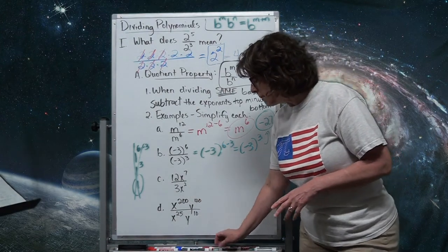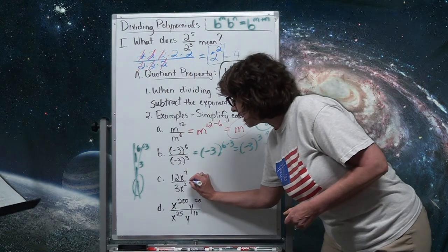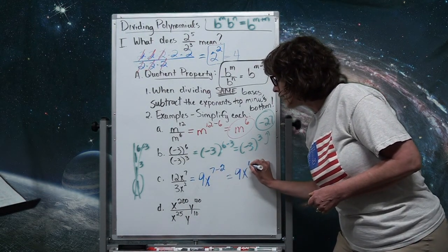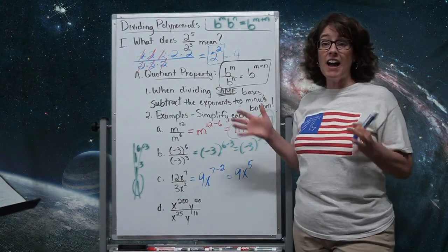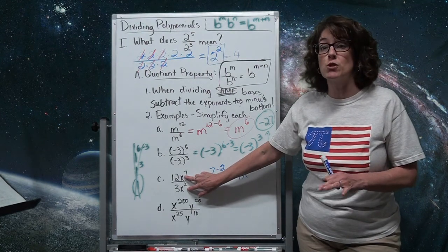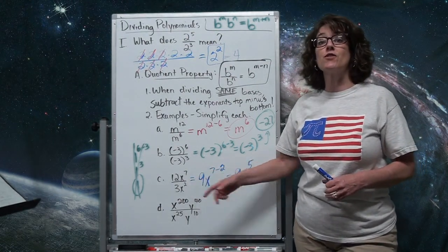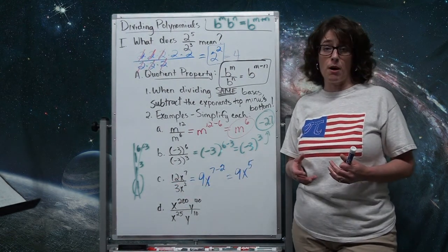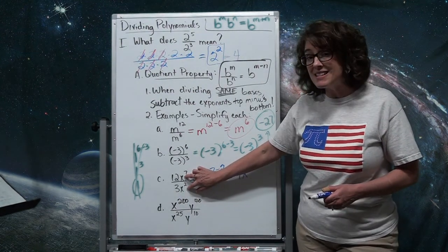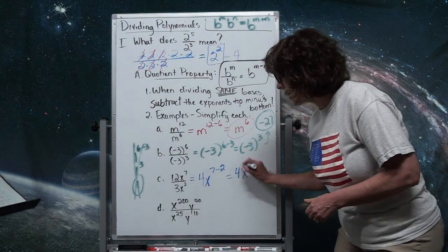In this example, a lot of people get excited and subtract the coefficients: 12 minus 3 to get 9, then subtract exponents 7 minus 2 to get 5, calling it 9x to the 5th. But those are coefficients, not bases — it's just a division problem. 12 divided by 3 is actually 4. Then subtract the exponents on the x's: 7 minus 2 is 5. So the answer is 4x to the 5th, not 9x to the 5th.